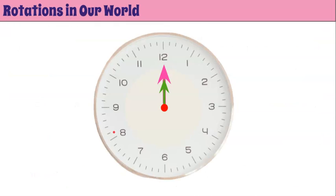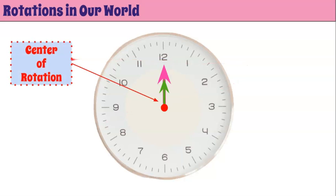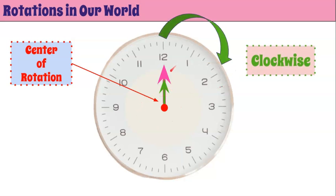Rotations in our real world — clocks are a perfect example of this. We can identify our center of rotation as the point that the clock hands pivot around and turn around. The term clockwise came from the direction the clock hands move around the clock, so moving clockwise means moving towards the right.